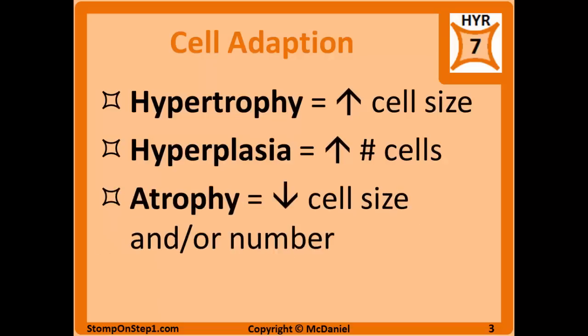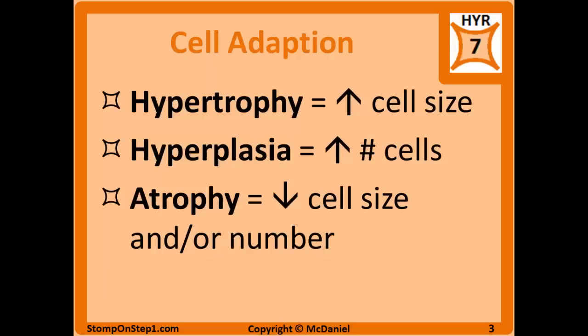Atrophy is when there's a decrease in cell stress and you have a decreased number of cells and decrease in cell size via apoptosis mainly, and also shrinking of different organelles in the cell through things like lysosomal degradation. An example would be a person who wears a cast for a really long time and doesn't use certain muscles, and those muscles are going to atrophy and shrink over time.